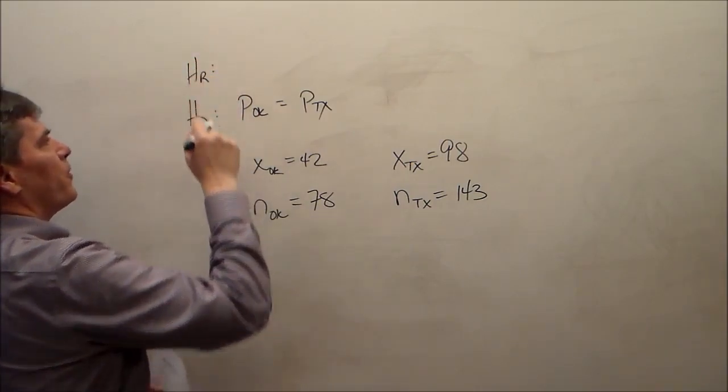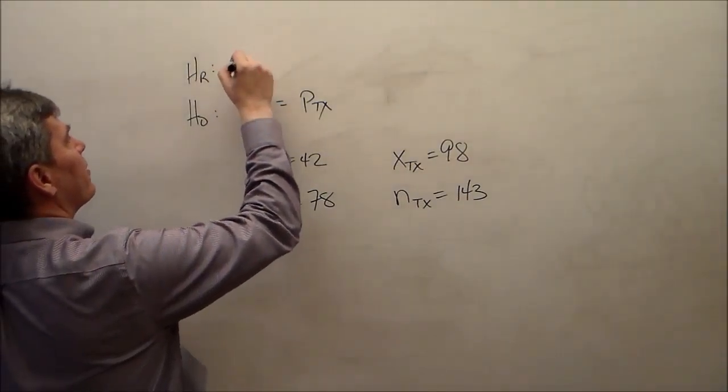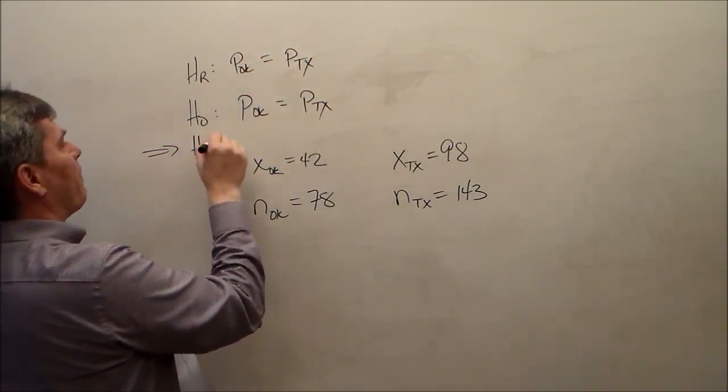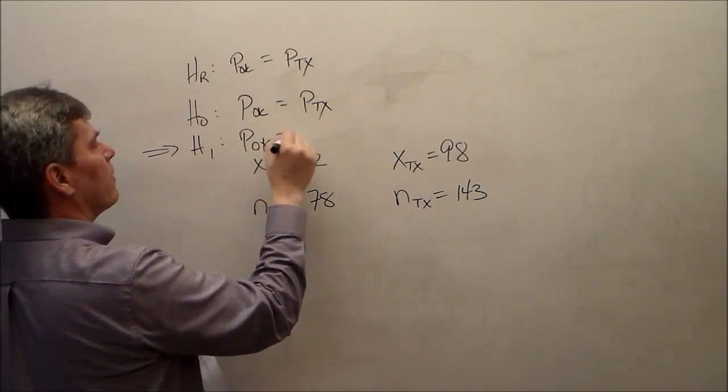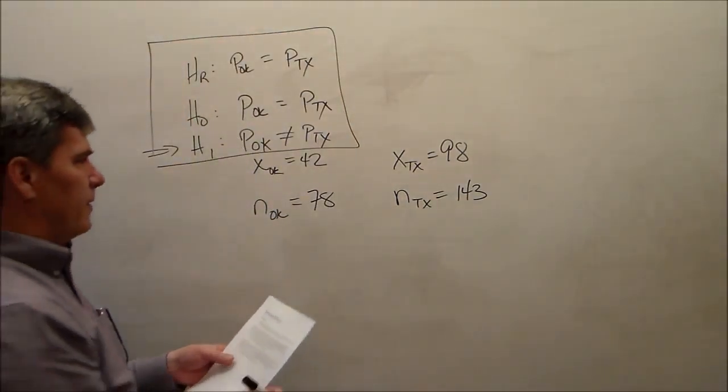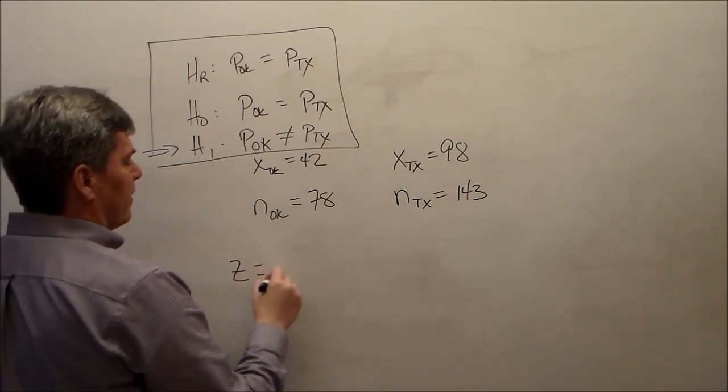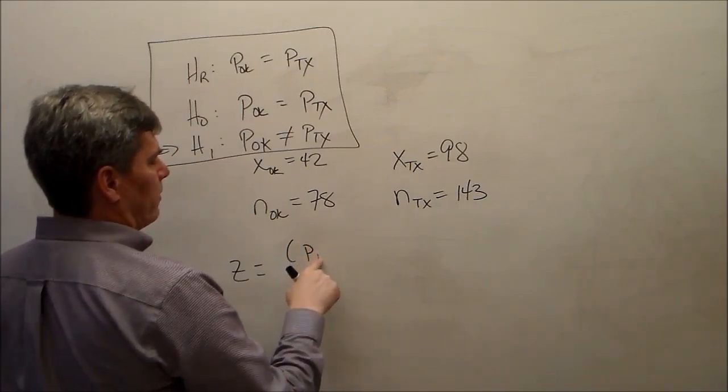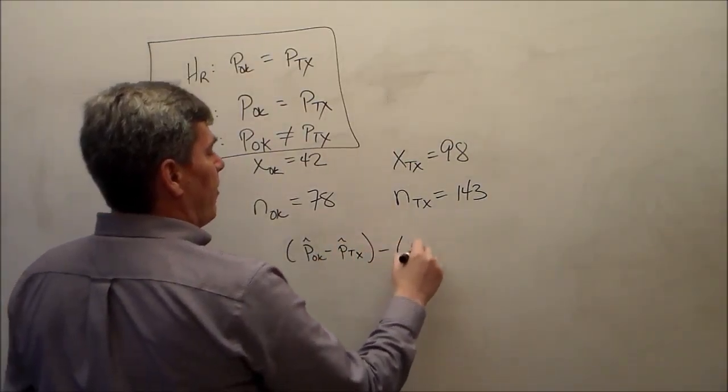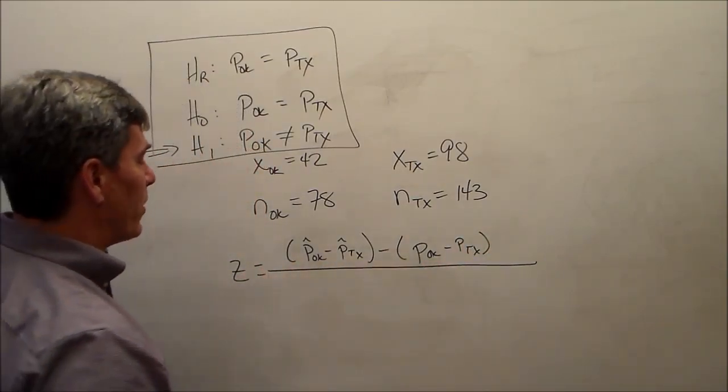Note that the research hypothesis or the claim is that they are the same. So the claim here is also P Oklahoma equals P Texas, which means that the alternative hypothesis is that they are not equal. We have our test statistic Z equal to P hat Oklahoma minus P hat Texas, minus P OK minus P TX, all over that incredible square root.